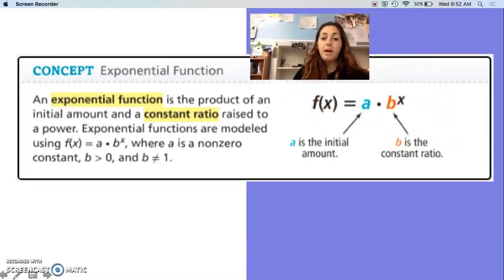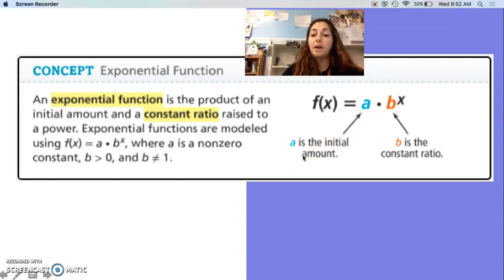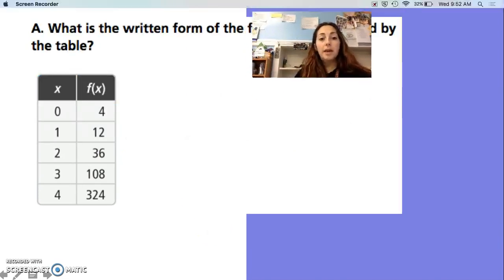Here's our concept summary on exponential functions. An exponential function is the product of the initial amount and a constant ratio raised to a power. So a is your initial amount, like your y-intercept with slope-intercept form. Now we've got an initial amount and the constant ratio. The difference is you're not adding every time, you're multiplying. And b can never be less than 0 or equal to 0, and it can't even be 1 because 1 to every single power gives you 1.